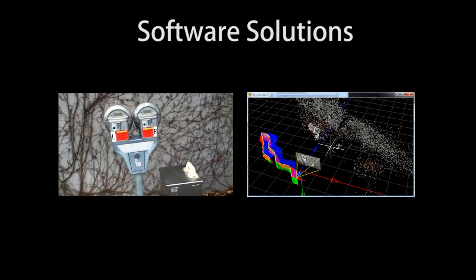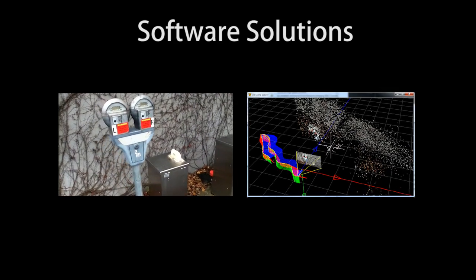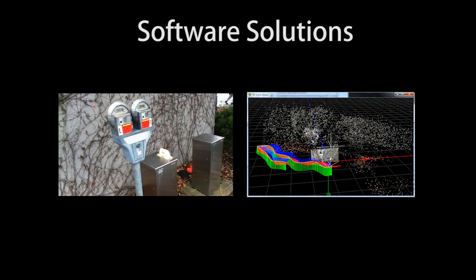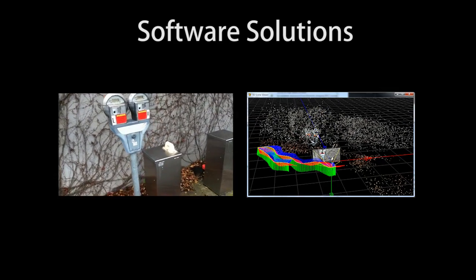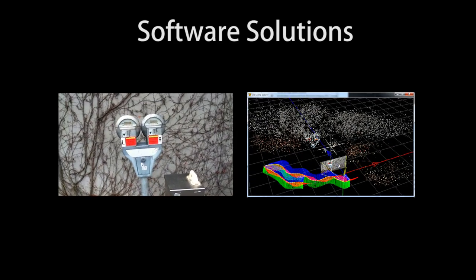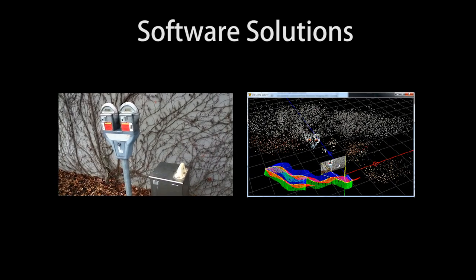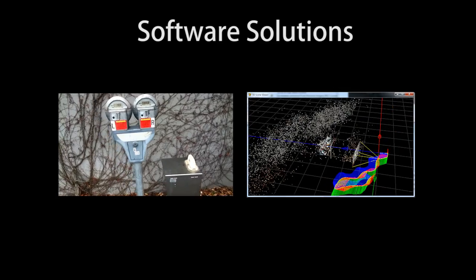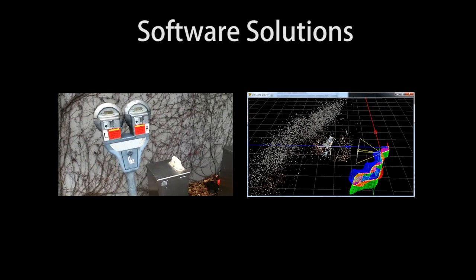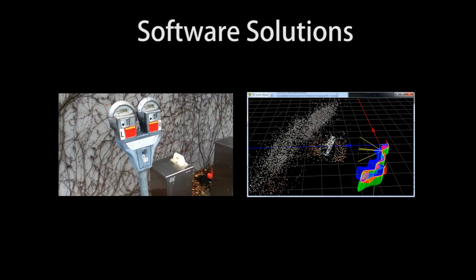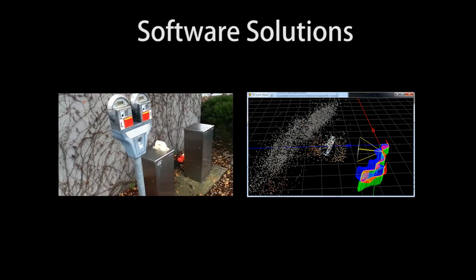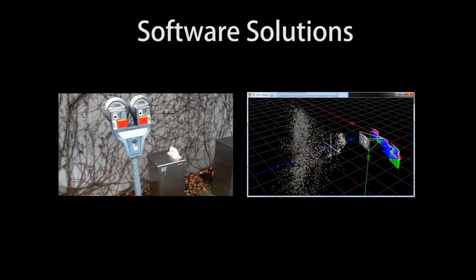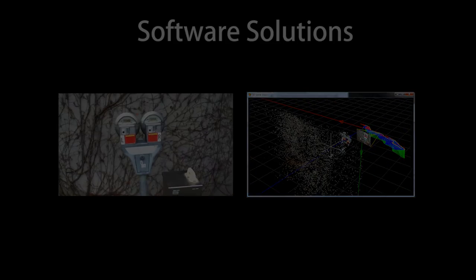Most existing algorithms track features in the image in order to recover the camera's motion and compensate for it. Shown here is Voodoo, a structure-from-motion package often used as a component in video stabilization algorithms. However, feature tracking is computationally expensive and is brittle in the presence of scene motion, poor lighting, motion blur, and image noise.